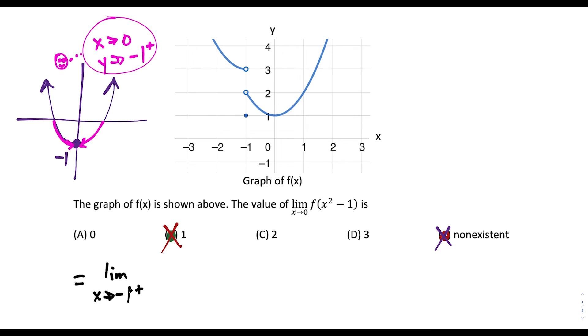So now when we evaluate this limit, we're finding the limit as x approaches negative 1 from the right side of f of x. And we look to this graph and see that when we approach negative 1 from the right side, our y value is approaching 2. So the solution is choice C. Our limit is equal to 2.